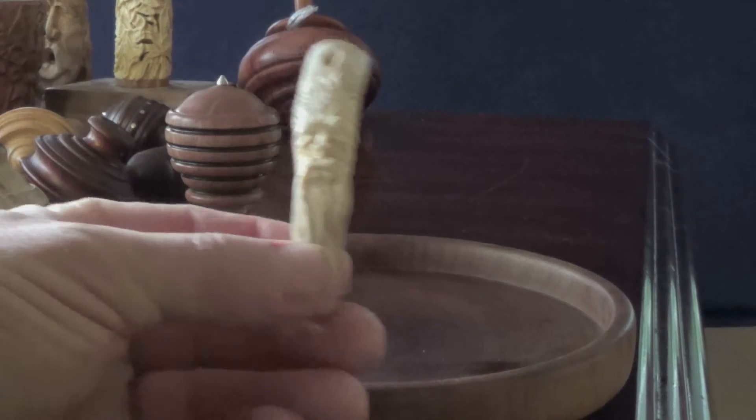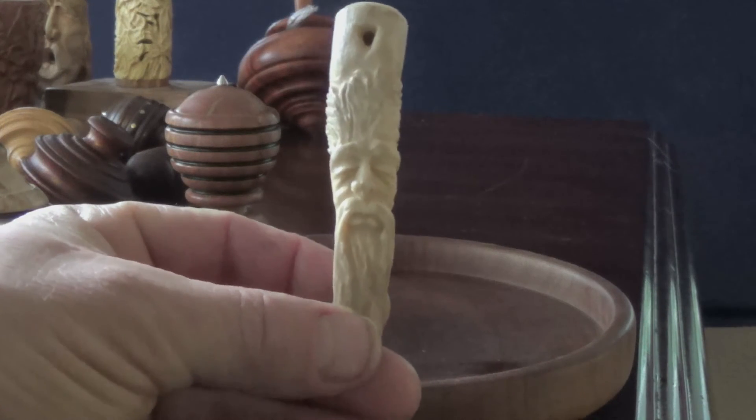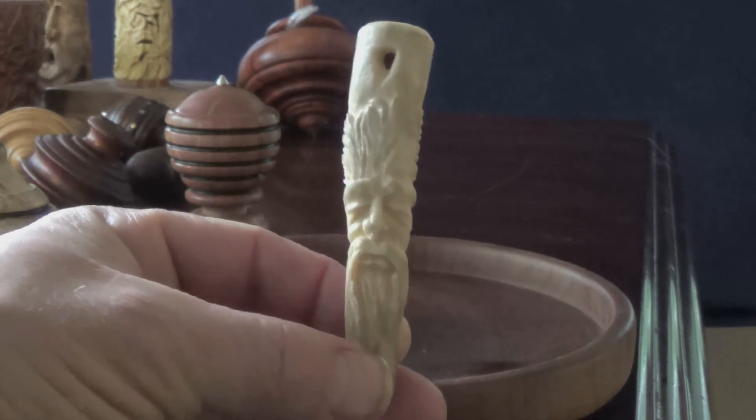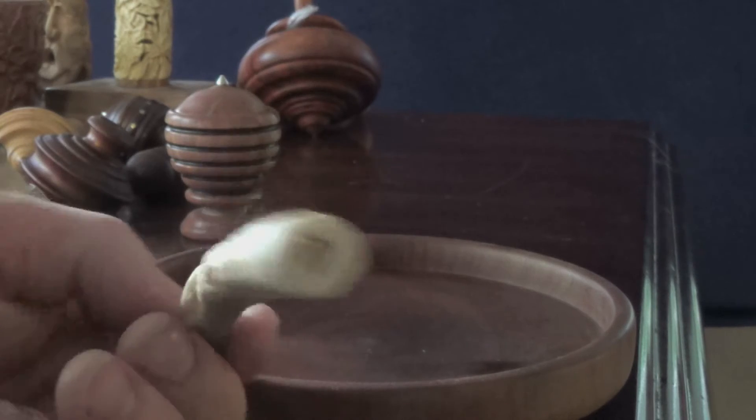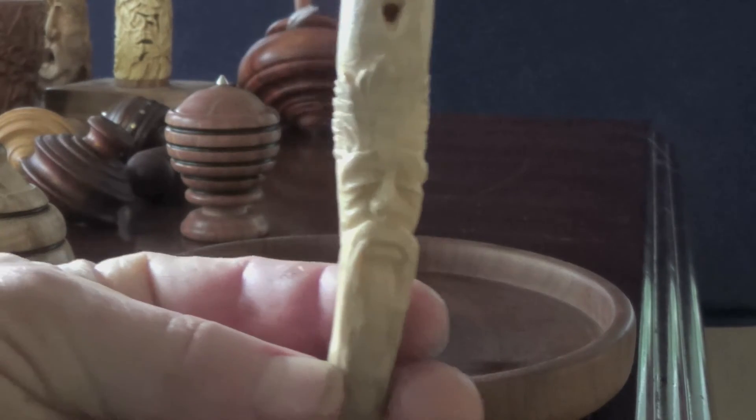This is a piece of deer antler that I carved, and it's a whistle. You see the top, and I put a walnut reed down inside and then carved a little face on it.